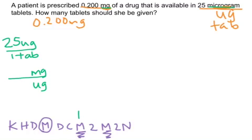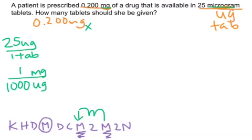If I look at the first unit on the left, that's milli, and that's going to be one milligram. Then I move over one, two, three places to see that that's 1,000 micrograms. Now I'm ready to plug this into my problem.